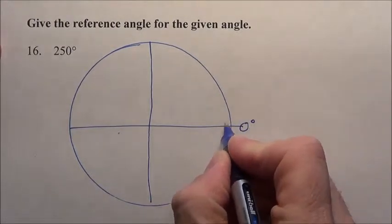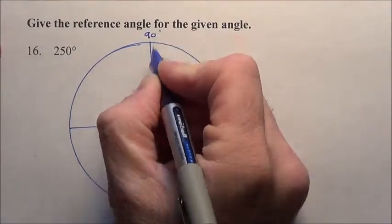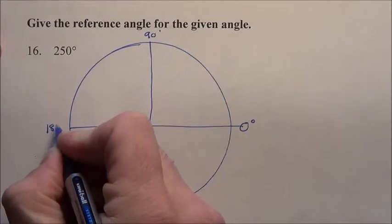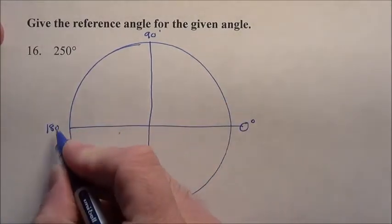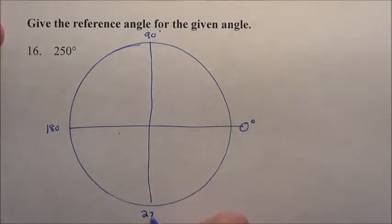We know right here is zero degrees, there would be 90. Another 90 is going to make 180, half open circle, semi-circle. Another 90 is going to be 270.